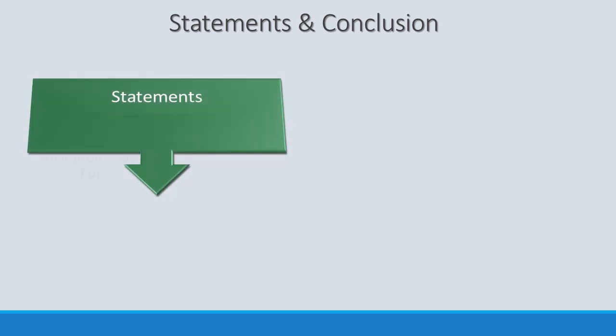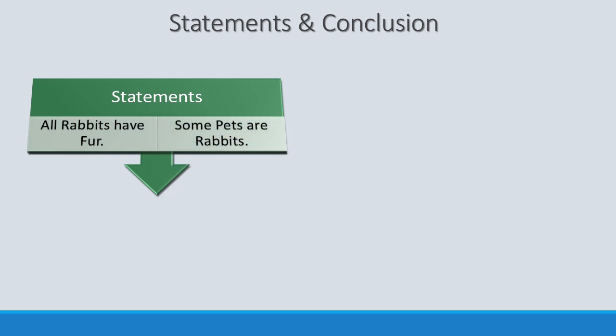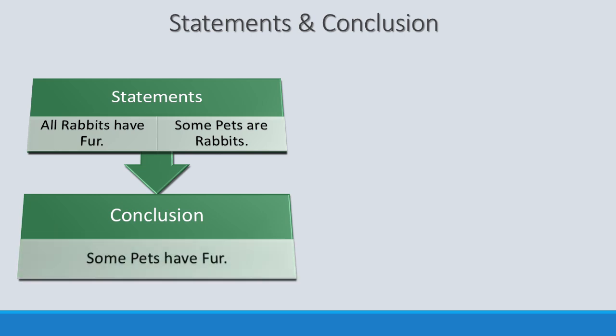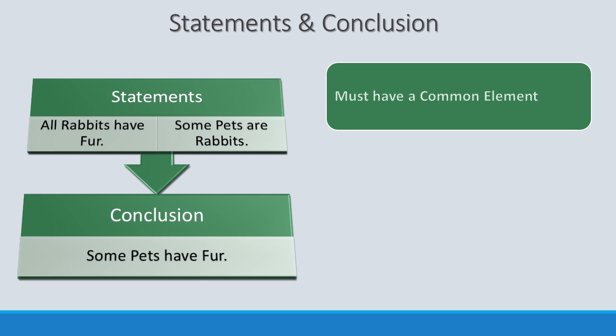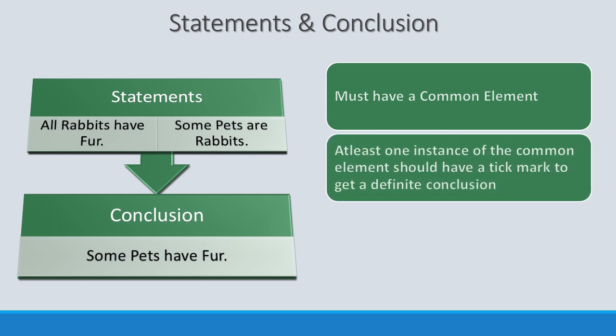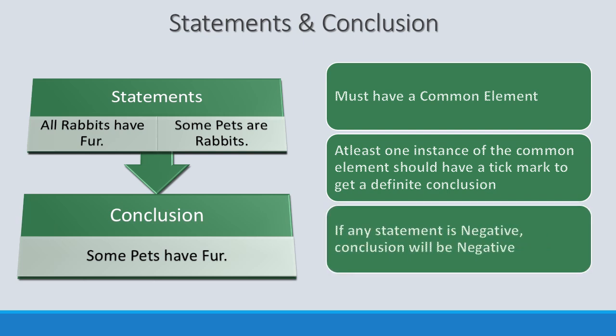Any syllogism problem must have at least two sentences: the first is called the major premise and the second is called the minor premise. From the two statements we can get a conclusion, but there are some conditions. One: we must have a common element in the two statements. Two: at least one instance of the common element should have a tick mark to get a definite conclusion — if both common elements have a cross, a definite conclusion is not possible. Three: if any single statement is negative, the conclusion will be negative.